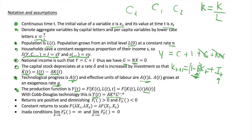We assume that returns to our production function are positive: increasing our input of labour increases output, and increasing capital also increases output. However, we have diminishing returns — so as we add more and more labour, the marginal return to that labour will decrease. These derivatives formally state that assumption.